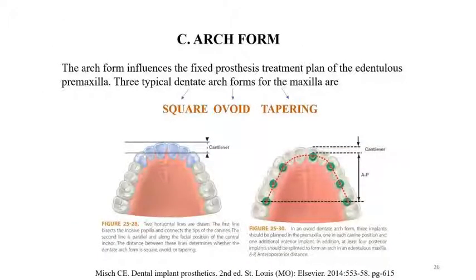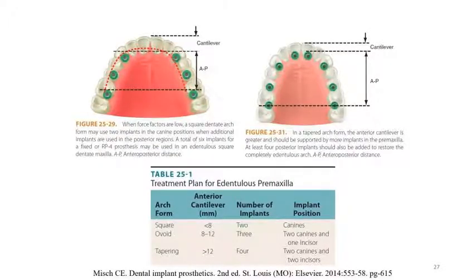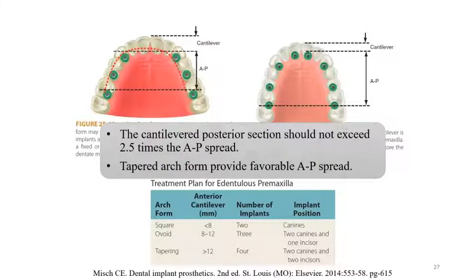Arch form influences the fixed prosthesis treatment plan for the edentulous pre-maxilla. There are three typical arch forms: square, ovoid, and tapering. Two horizontal lines are drawn — the first bisects the incisive papilla and connects the canine tips, and the second is parallel along the facial position of the central incisor; the distance between these lines determines the arch form. The square arch form has an anterior cantilever of more than 8 mm, ovoid is 8 to 12 mm, and tapering is 12 mm. The number of implants depends on the arch form: square arch form requires 2 implants, ovoid requires 3, and tapering requires 4. The posterior cantilever should not exceed 2.5 times the AP spread, and the tapered arch form provides more favorable anterior-posterior spread.